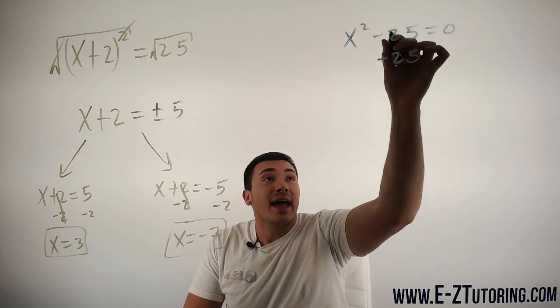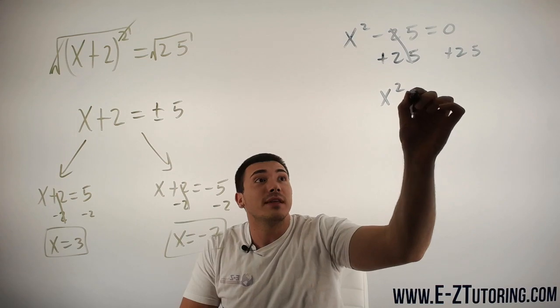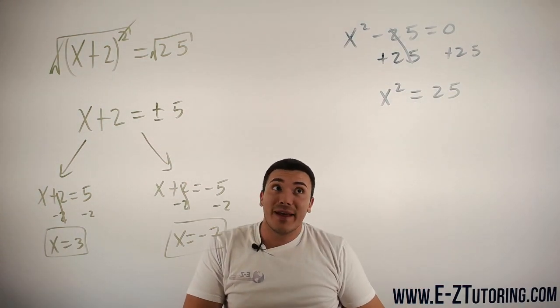So let's go ahead and add the 25 to both sides so we can have only x² on the left side, which we now have.